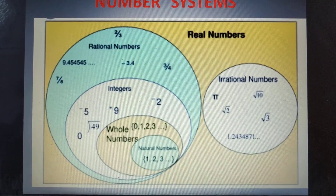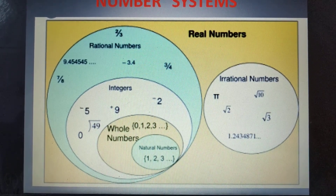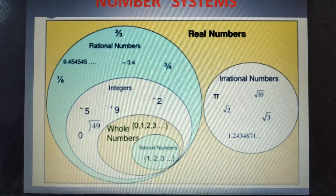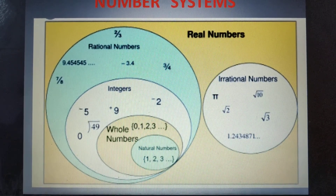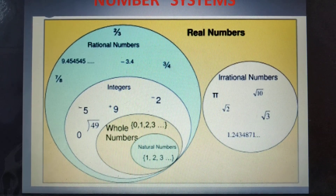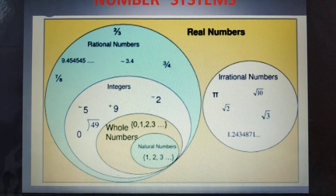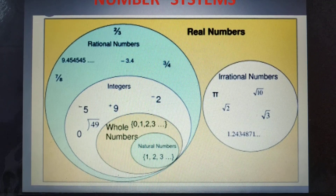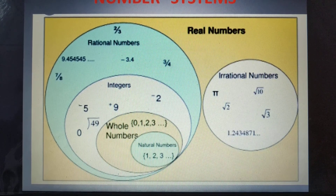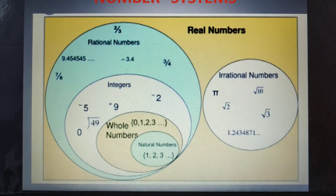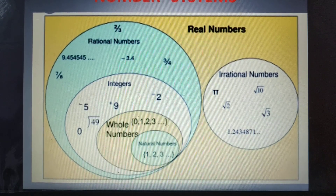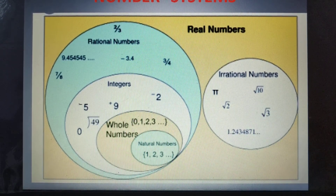The integers are the set of all natural numbers, whole numbers, and the negatives of the natural numbers. Once you include natural numbers, whole numbers, integers, fractions, and decimals, that forms the rational numbers. Numbers which are not rational — such as pi, root 2, root 3, etc. — are irrational. Together they form the set of real numbers.